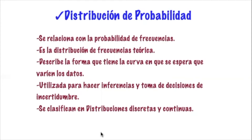Se toma la decisión en cuestiones de incertidumbre: ¿qué error quiero asumir? ¿Hasta dónde me voy a arriesgar para ver si mis datos están dentro de esa población o no? Al mismo tiempo, la distribución de probabilidad se clasifica en discreta y continua, igual que las variables que vimos anteriormente.